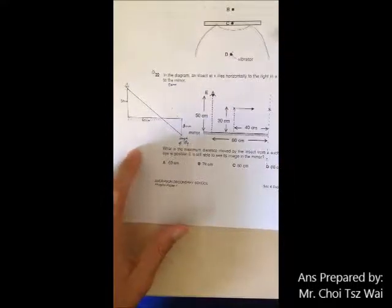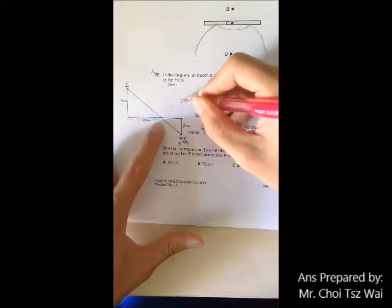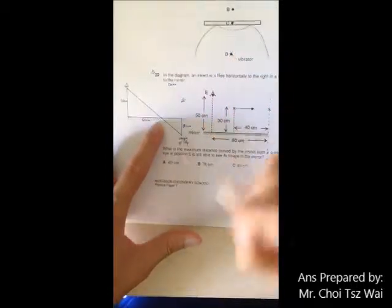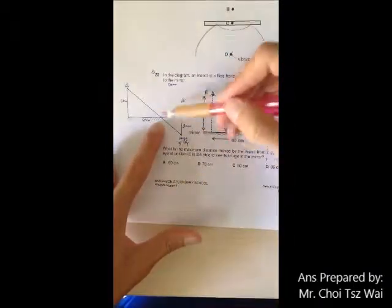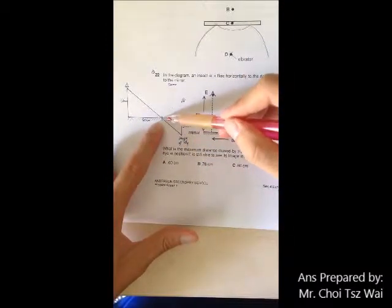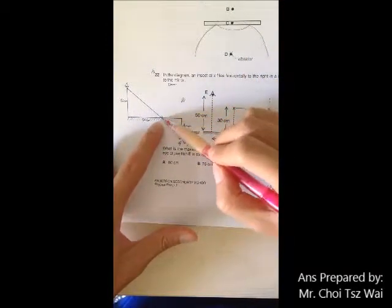And I know that the maximum distance that I can see the fly would be whereby the light ray actually just bounces off from the edge.